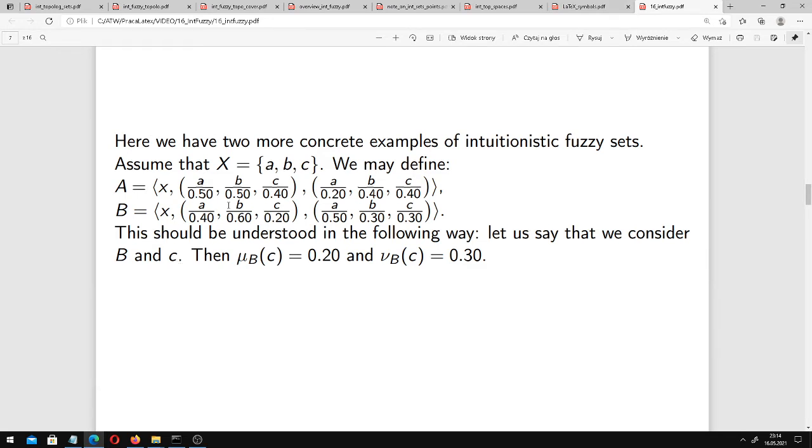Let us say that we consider capital B, IFS B, and an element c. Then μ_B(c) has value 0.20 and ν_B(c), non-membership, has value 0.30. And this is written here. For c, we have 0.20 membership and 0.30 non-membership.